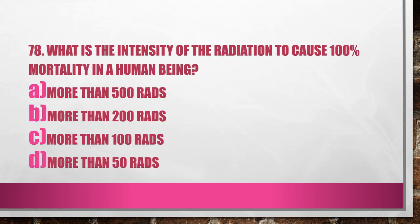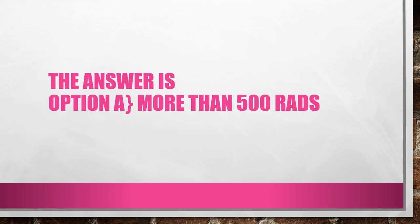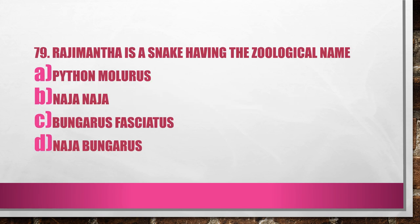Question No. 78. What is the intensity of the radiation to cause 100% mortality in a human being? A. More than 500 rads, B. More than 200 rads, C. More than 100 rads, D. More than 50 rads. The answer is Option A, more than 500 rads.